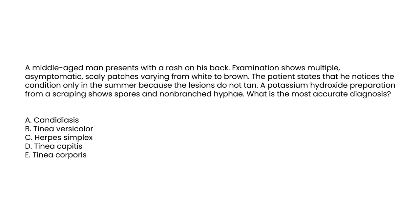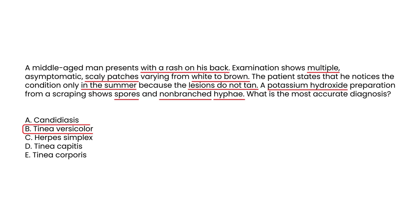Let's take a look at a couple of clinical vignettes. A middle-aged man presents with a rash on his back. Examination shows multiple asymptomatic scaly patches varying from white to brown. The patient states that he notices the condition only in the summer because the lesions do not tan. A potassium hydroxide preparation from the scraping shows spores and non-branched hyphae. What is the most accurate diagnosis? You couldn't get a more classic clinical vignette that describes tinea versicolor.